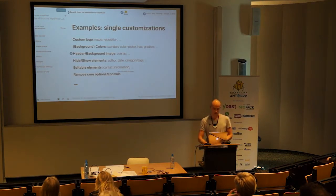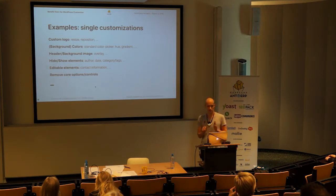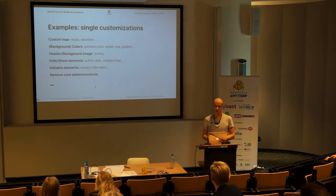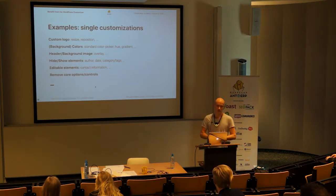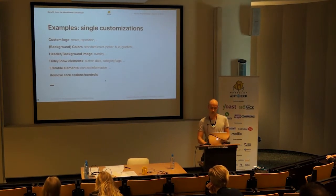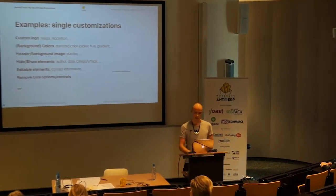A couple of other single-element options: you probably know the problem of adding a background image where the text becomes unreadable. You could add a layer whose transparency can be adjusted by the user so the text is again readable. You can toggle elements — hide and show — for example post metadata for blog posts. You can also add editable elements, like contact information or a phone number in the top right of your site. Also, don't forget to remove controls that you don't use, because having an option that does nothing can be confusing.